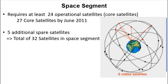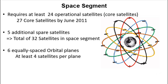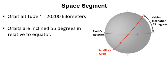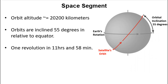These additional satellites help maintain coverage whenever any of the core satellites is being repaired. The satellites in the GPS constellation are arranged into six equally spaced orbital planes. Each plane contains at least four satellites. The satellites have an orbit altitude of around 20,200 kilometers above Earth's surface. Also, the orbits are inclined 55 degrees relative to the equator. Each of the satellites makes one revolution in 11 hours and 58 minutes, meaning each satellite circles planet Earth twice a day. Keep in mind that while the satellite is rotating, the Earth is rotating as well, and they don't have the same speed of rotation.